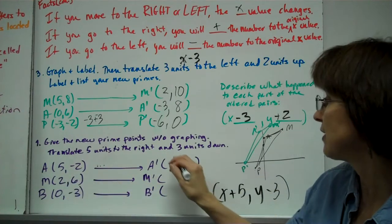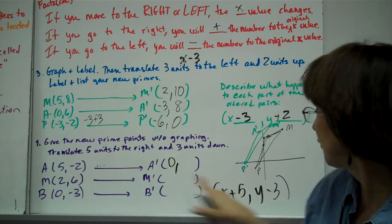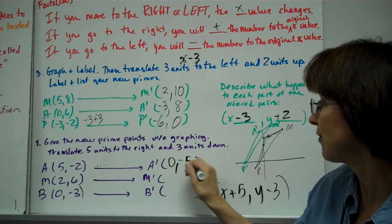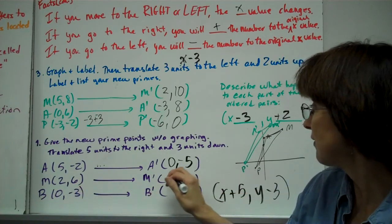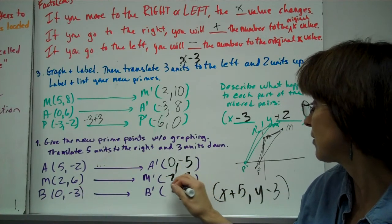If you do that to each of these here, you'll get your right prime number. So x is 5, 5+5=0 for A prime. -2-3=-5.